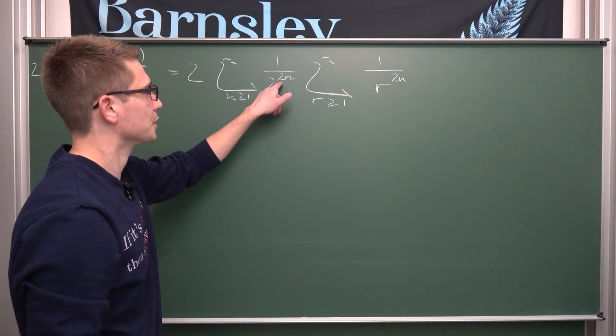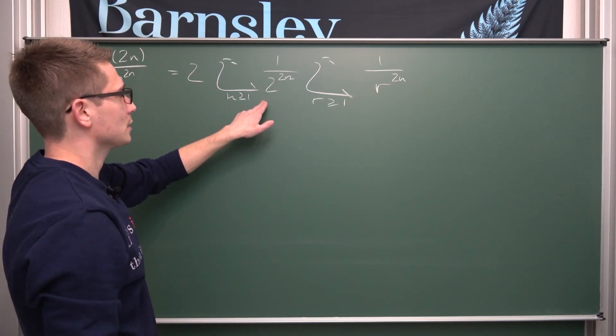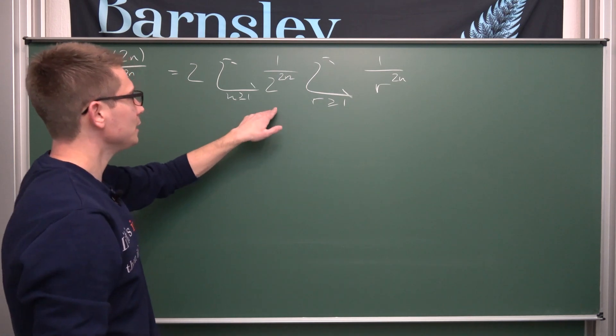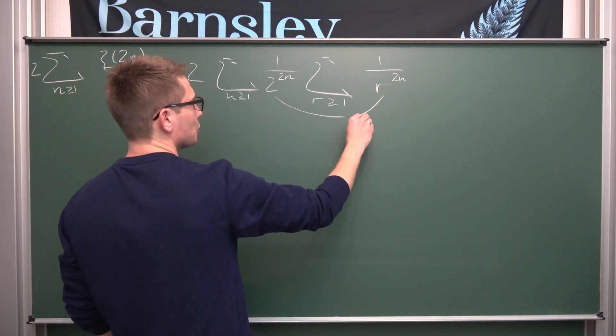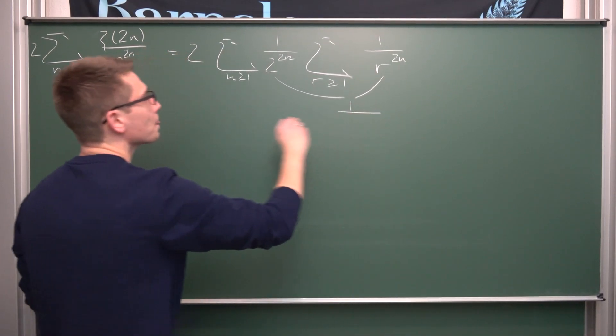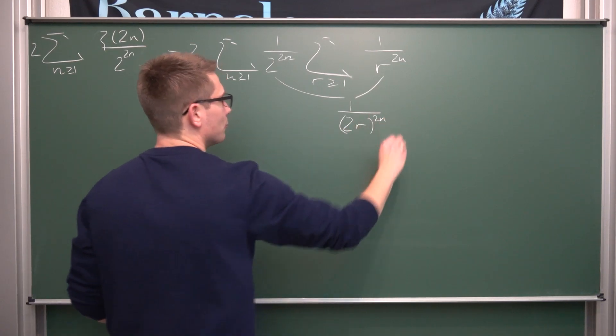So let us bring the series to the front basically, and let's just bring those two together. Those two are going to result in an argument of 1 over, this is going to give us 2r to the 2n-th power.